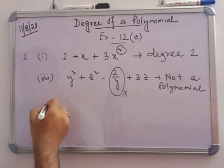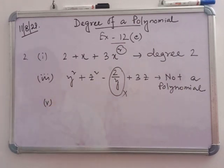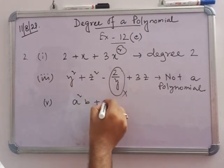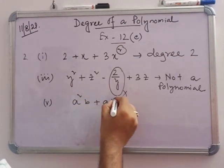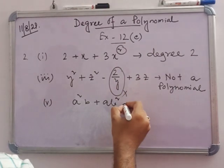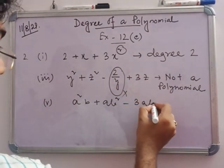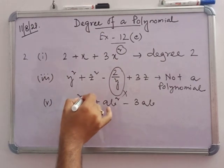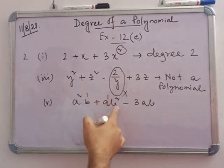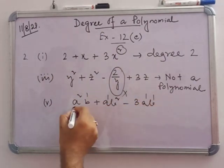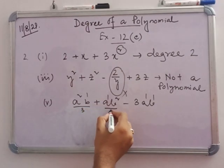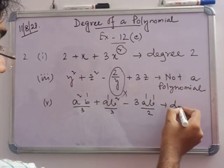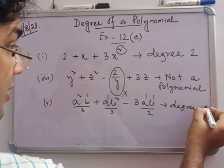In number 5: a squared b plus ab squared minus 3ab. For the first term the sum of powers is 2 plus 1 equals 3, for the second term it is 1 plus 2 equals 3, and for the third term it is 2. So the degree is 3.